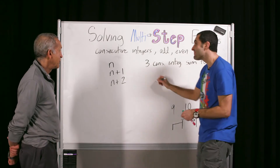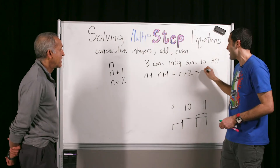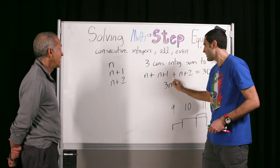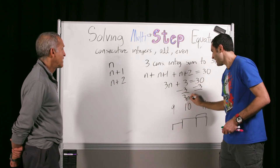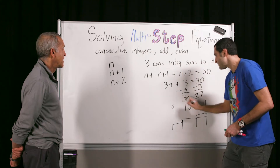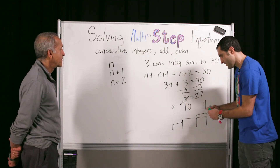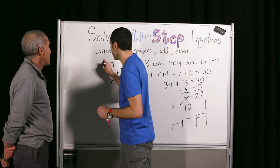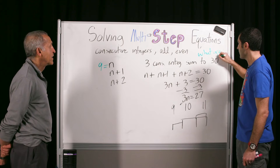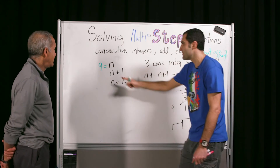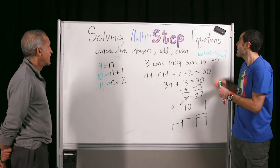Now let's do algebra. n plus n plus one plus n plus two equals 30. What is n plus n plus n? 3n. What is 1 plus 2? Plus 3. Equals 30. Do what to both sides first? Minus 3. So we get 3n equals 27. Divide by 3. n equals 9. Now the problem's not done — they said three consecutive numbers that sum to 30. What are they? 9, 10, and 11 — that's n, n plus 1, n plus 2.